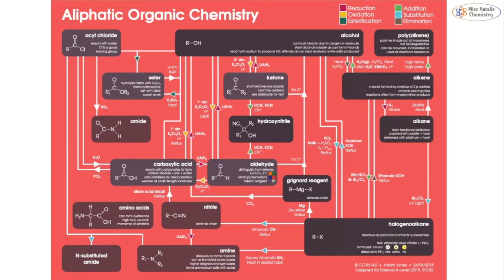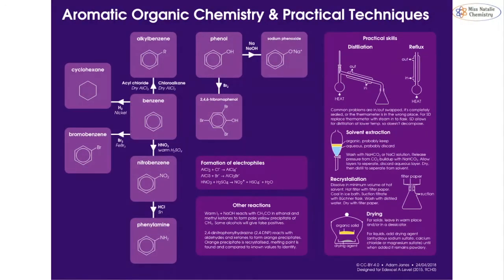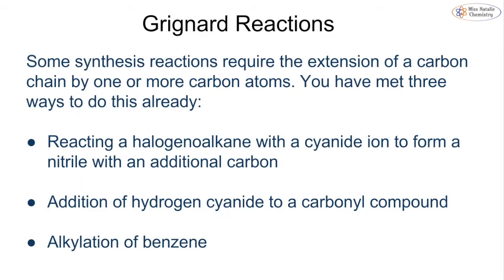The reaction map covers all aliphatic molecules: acid chlorides, amides, aldehydes, Grignard reagents, alkanes, alkenes, and alcohols, showing all the different ways to convert between them. There is also a similar map for aromatic organic chemistry, showing how to go from benzene or phenol through the different reactions, which can be found in another video.